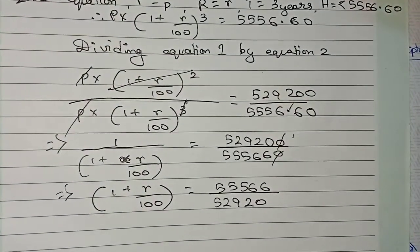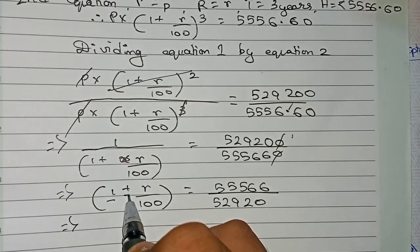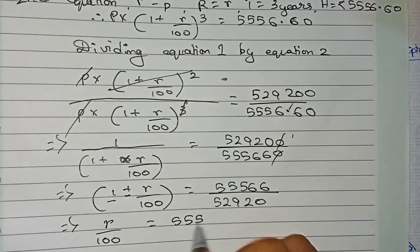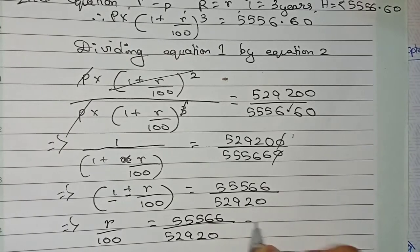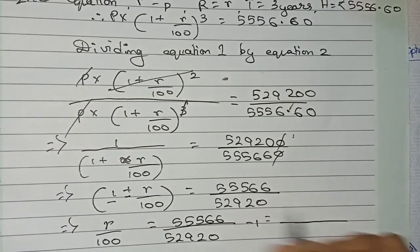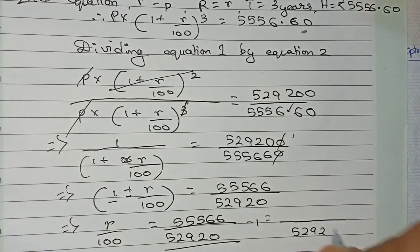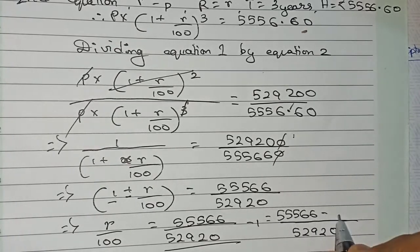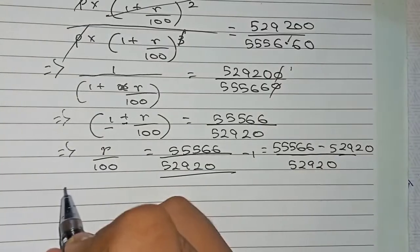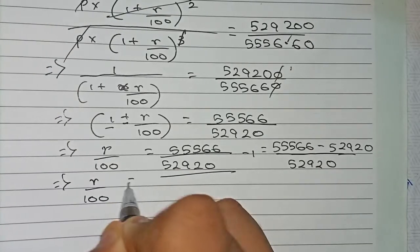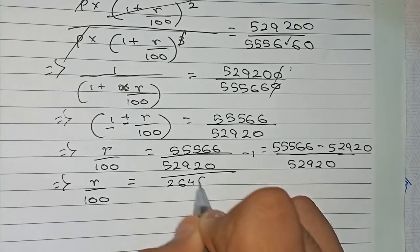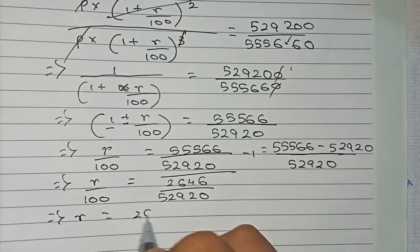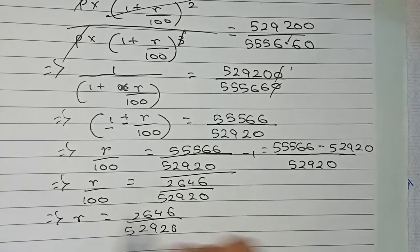So 1 plus R by 100 equals 55,566 by 52,920. Now we take this 1 to this side, so as it is in addition here it will go for subtraction. So it becomes R by 100 equals 55,566 by 52,920 minus 1. Taking 52,920 as the LCM, it becomes 55,566 minus 52,920 all over 52,920. So R by 100 equals 2,646 by 52,920.